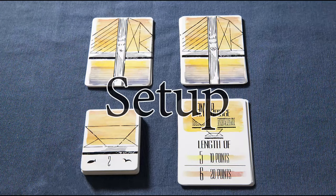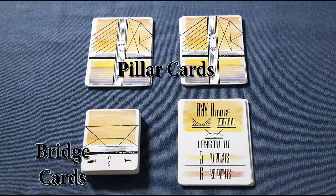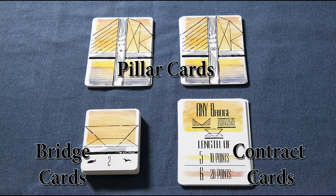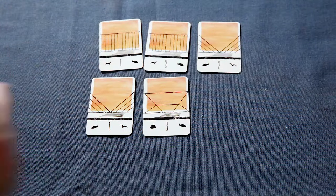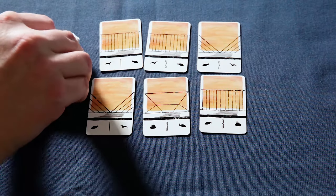There are three types of cards used in the game: pillar cards, bridge cards, and contract cards, though we won't use contracts in the intro game. Separate the pillar cards based on their symbols and hand a set to each player. Shuffle the bridge cards and deal out six face up. Now let's take a closer look at them.